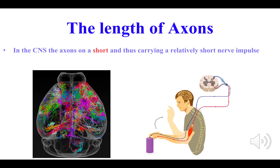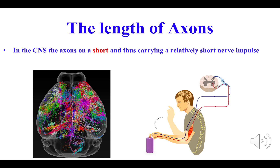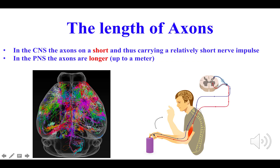In terms of the length of the axons, in the brain we've got relatively short fibres which conduct short nerve impulses in relative terms. Whereas in the peripheral nervous system, the axons are longer. For instance, on this image here we can see a long axon that reaches all the way from the spinal cord out to the fingertips to conduct a motor signal — an efferent signal. And there's also a sensory axon that conveys information all the way from the hand back to the spinal cord.